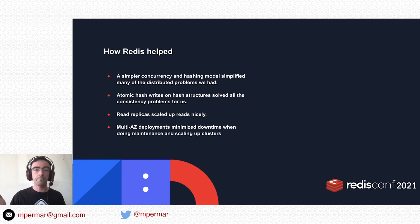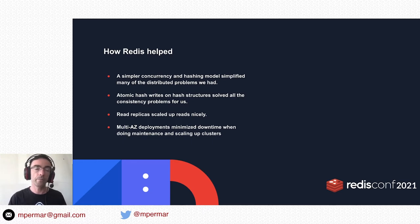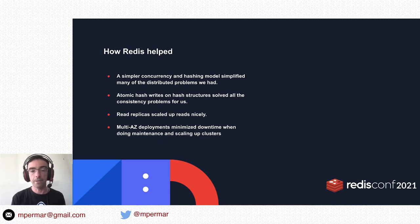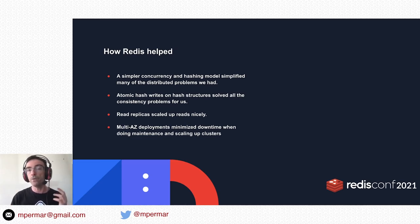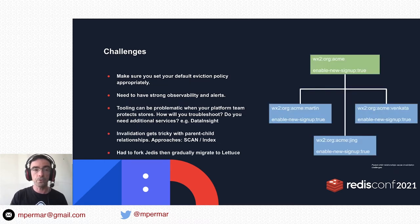Simple concurrency was fundamental. Atomic hash writes were key as well. Having many read replicas to absorb all read load helped scale the system nicely. Multi-AZ deployments minimized downtime considerably — scaling up barely impacted customers because we always had nodes in other availability zones while upgrading others. That worked very smoothly.